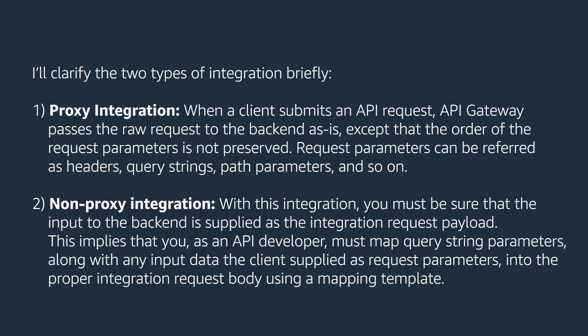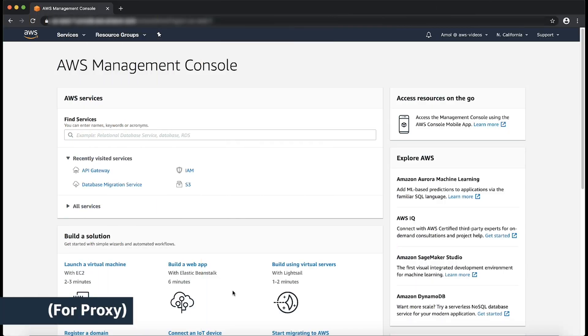The second kind is non-proxy integration. With this integration, you must be sure that the input to the backend is supplied as the integration request payload. This implies that you as an API developer must map the query string parameters along with any input data the client supplied as the request parameters into the proper integration request body using a mapping template.